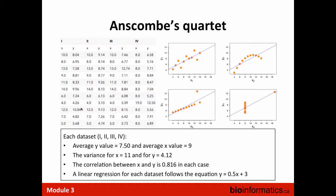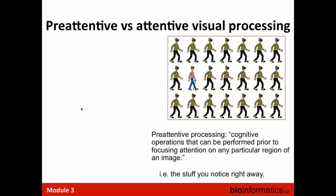Identification of outliers is something we can do amazingly fast visually without much conscious effort. This is a process called pre-attentive processing. It basically means the stuff you notice right away. Our brains have the capability of capturing things like color, shape, and size and processing them without any conscious effort. So we can tell immediately when part of an image is different from the rest. In an example where there are only one or two differences and everything else is the same, it's very easy to spot the outlier.